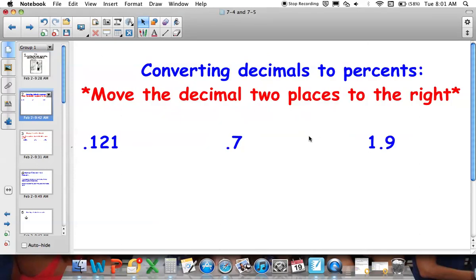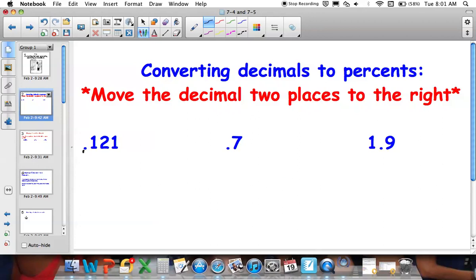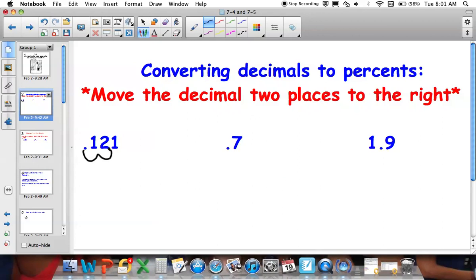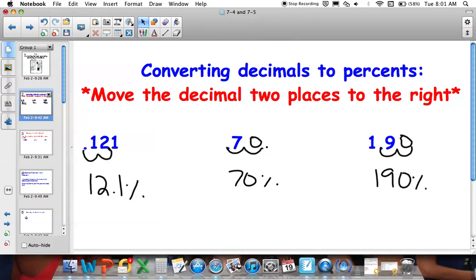So, converting between decimals and percents. When you convert from a decimal to a percent, you're really just multiplying by 100 each time. And the shortcut is to move the decimal two places to the right. So, we have these three examples. And all you do is move the decimal two places to the right. So, 0.121 is the same as 12.1%. 7 tenths is the same as, we've got to fill in a zero here, 70%. And 1 and 9 tenths is the same as 190%. So, that's not too bad.